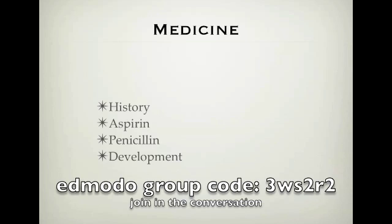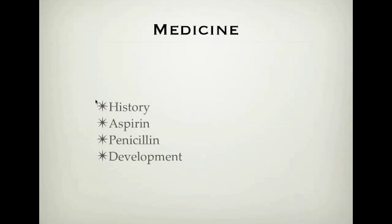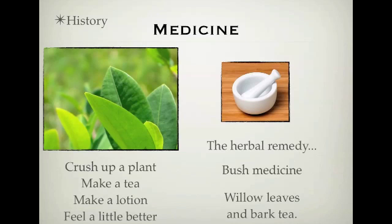In this episode we're going to look at a bit of the history about medicine and where it comes from, how we develop medicines. We're going to look at two medicines in particular — aspirin, how that came about, and penicillin. Then we're going to look at the development of new medicines and all the different things we need to take into account. This video will be on aspirin; the next one will be on penicillin.